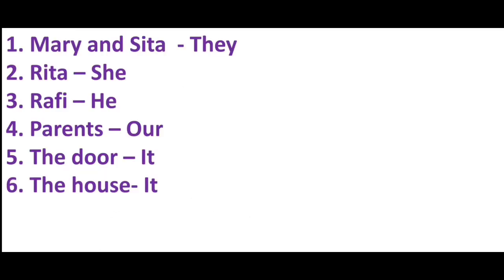Look at the answers here. First: Mary and Sita — they. Second: Rita — she. Third: Rafi — he. Fourth: Parents — our. Fifth: The door — it. Sixth: The house — it.